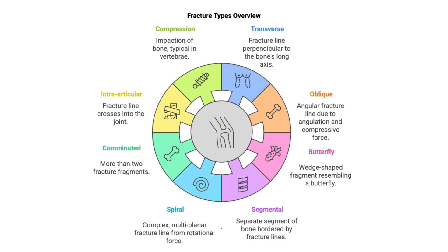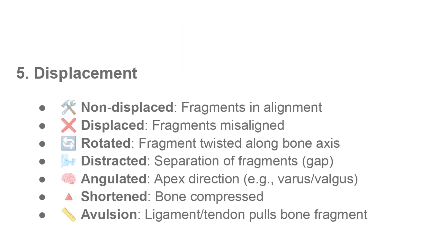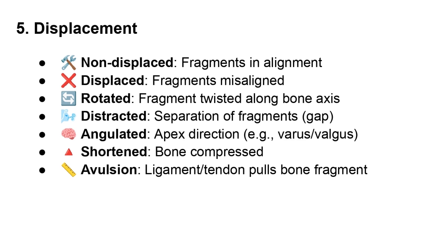Following the pattern, we have to consider displacement — simply put, whether the broken ends of the bone are still lined up properly or not. If they are lined up, that's non-displaced. If they're not, that's displaced. There are specific ways a bone can be misaligned: they can be pulled apart, which is distracted; they can overlap, which is translated; and then there's angulation, which is when there's an angle to the break.